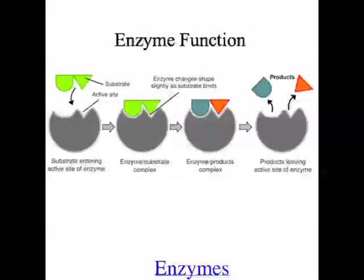Enzymes are specific to one reaction. So one type of enzyme can't help photosynthesis take place and then go and help cellular respiration take place. One enzyme is very specific to one chemical reaction. Enzymes are also affected by temperature.